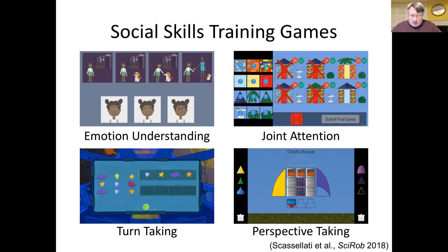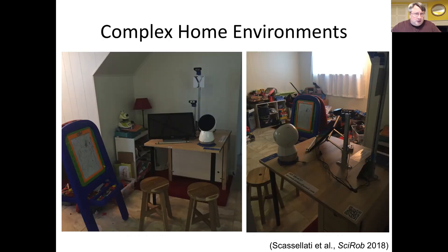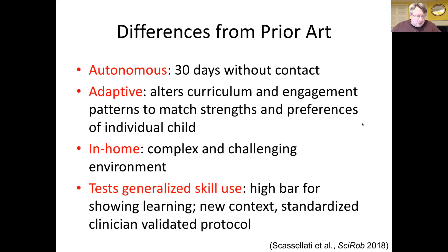We operated these systems autonomously for 30 days in probably one of the most complex environments roboticists deal with. Honestly, I would rather design software for a Mars rover than for a system to work in the home, because at least most things on the surface of Mars are predictable within a range. But in the home setting, everything changes all the time and there's very little regularity you can rely upon. Even so, we maintained 30 days without contact with the research team, building an adaptive system tailored to the strengths, preferences, and responses of each individual child.